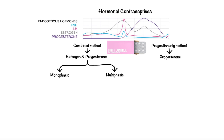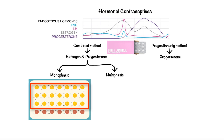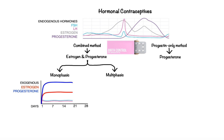In monophasic formulations, the pills deliver the same amount of estrogen and progestin each day for the first 21 days, followed by 7 days suspension or 7 days of placebo pills. Administration of exogenous estrogen and progestin leads to continuous suppression of LH and FSH output from the pituitary, which results in inhibition of ovulation. The last 7 days of suspension or placebo allow estrogen and progestin levels to fall dramatically, thereby triggering so-called withdrawal bleeding that mimics the normal menstrual cycle.